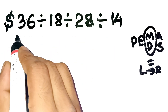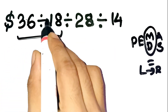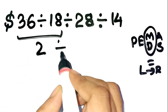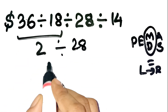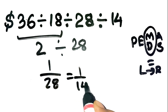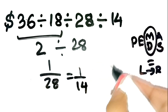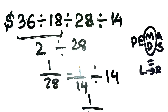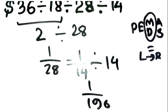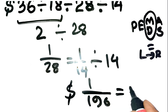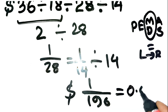Starting from the left: 36 divided by 18 equals 2. Now take that 2 divided by 28 — that gives you 2 over 28, or 1 over 14. Now take that 1 over 14, divided by 14 again. That's 1 over 196. So the final answer is not $1 — it's actually 1 over 196, or roughly half a cent, about $0.005.